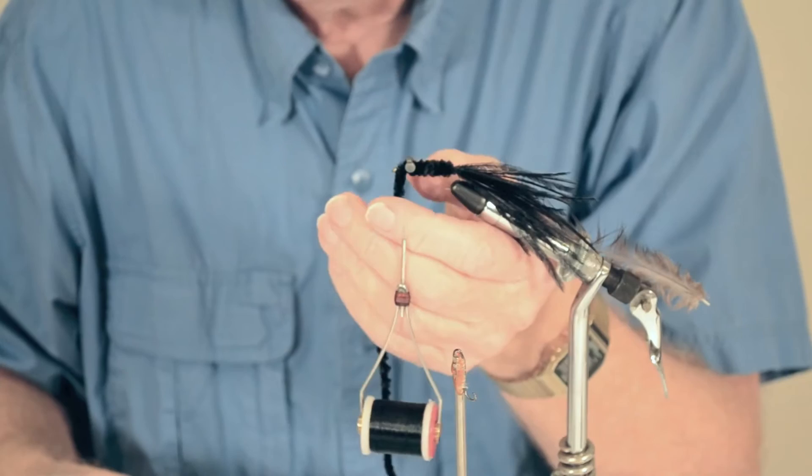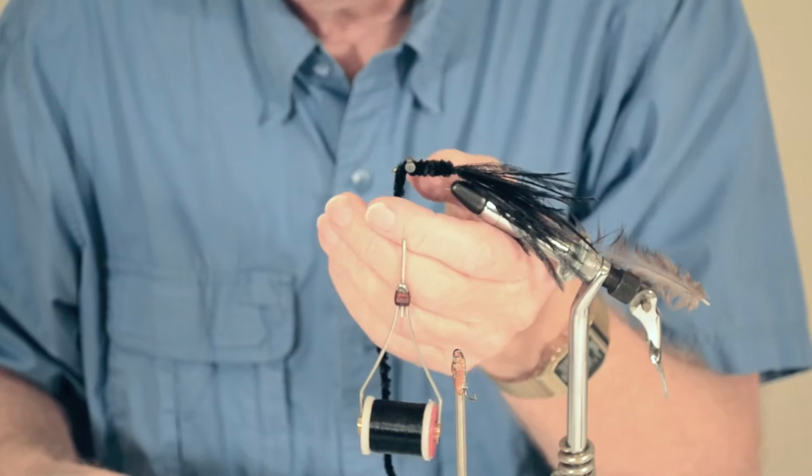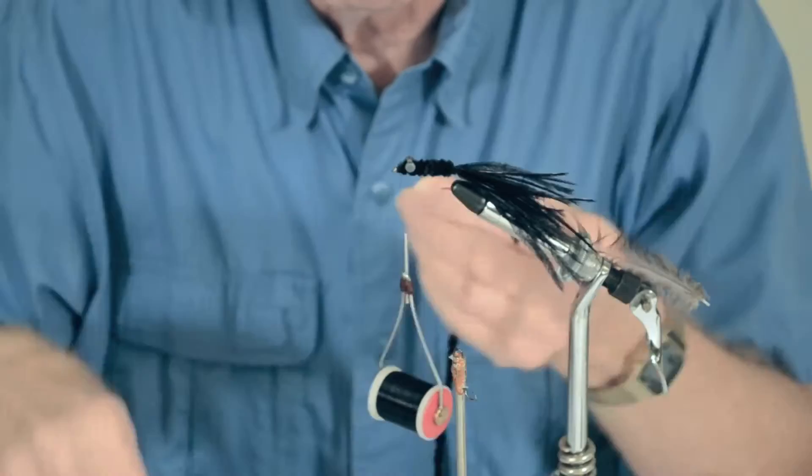Tie that off. A trick I like is to use my line hand, I mean my left hand, to push that bobbin away so I don't cut the thread and say a bad word.